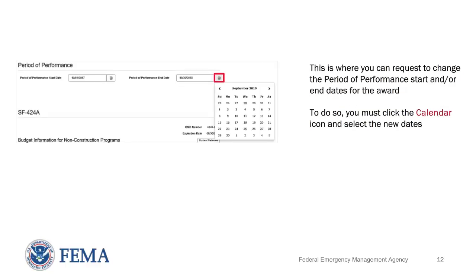Next on the page is the Period of Performance section. This is where you can request to change the period of performance start and/or end dates for the award. To do so, you must click the calendar icon and select the new dates.